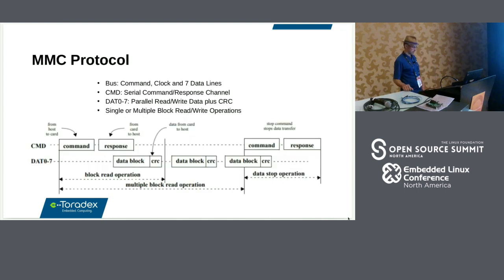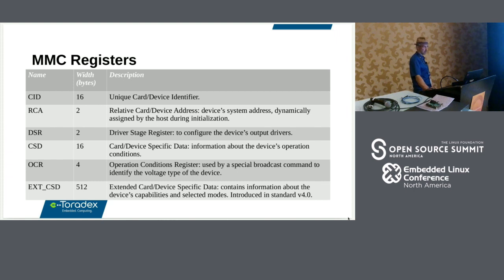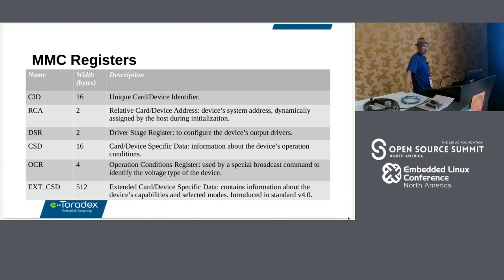How does the MMC protocol work? It's basically a bus with command, clock, and seven data lines. The command line is a serial command-response channel, and the data is a parallel read-write data channel with CRC. You can have single or multiple block read-write operations. There is also a register set — what's interesting is the extended card-specific data, which contains more information, including lifespan information added at a certain point.